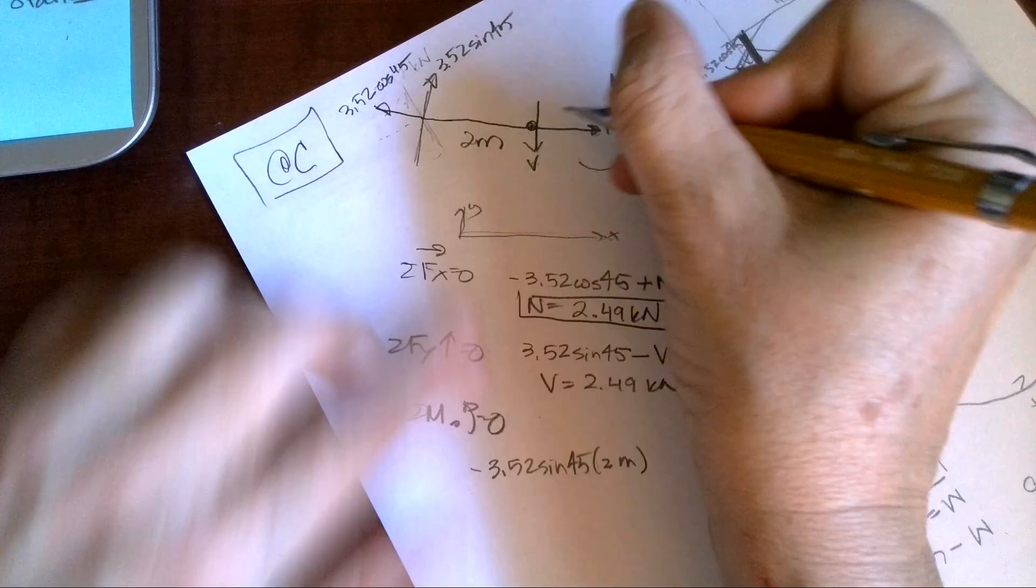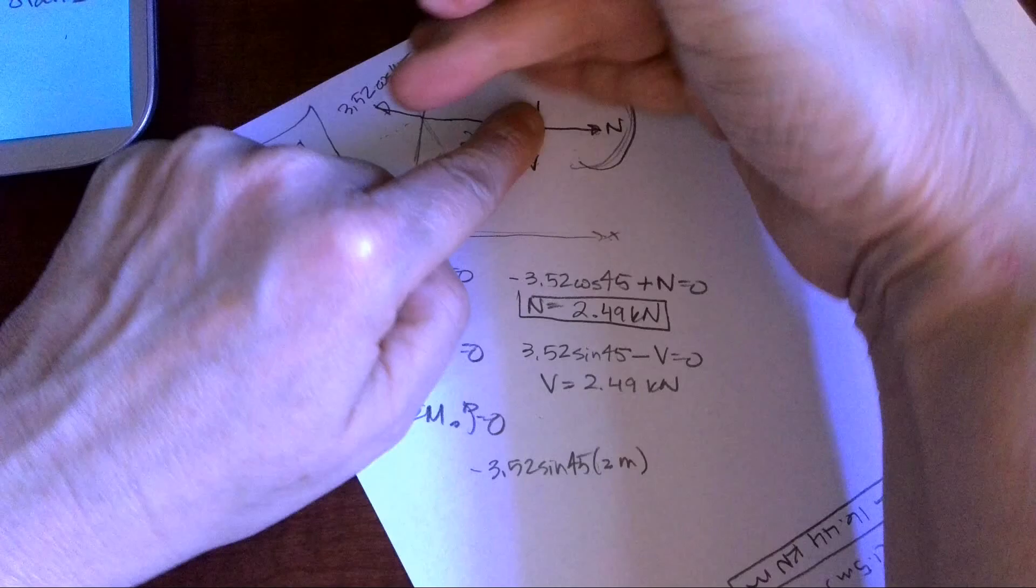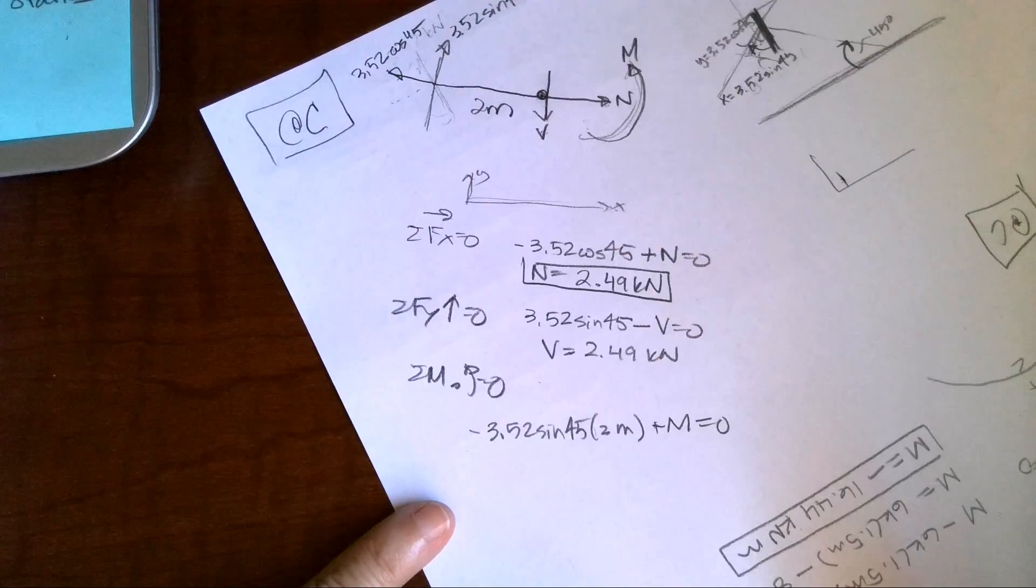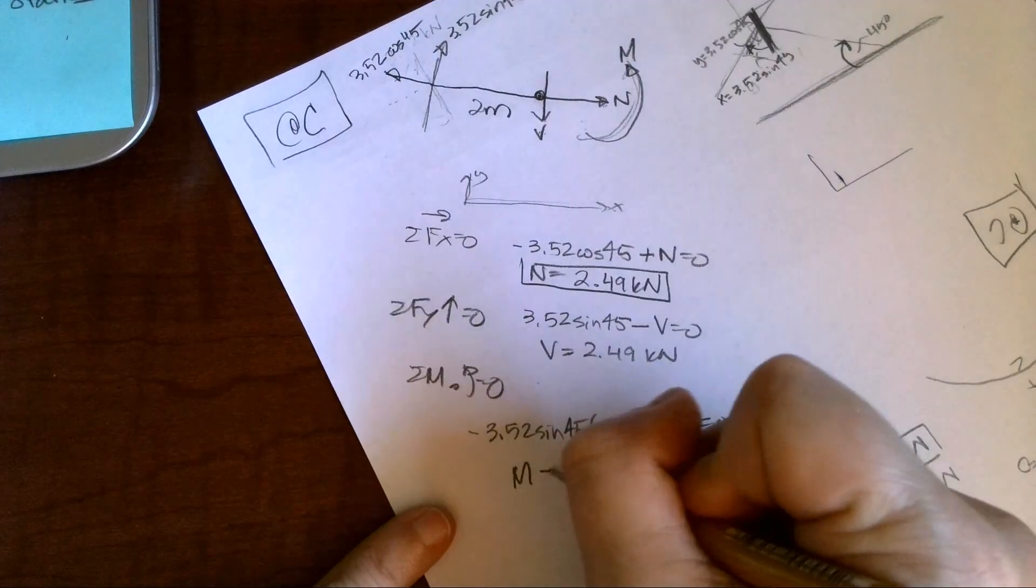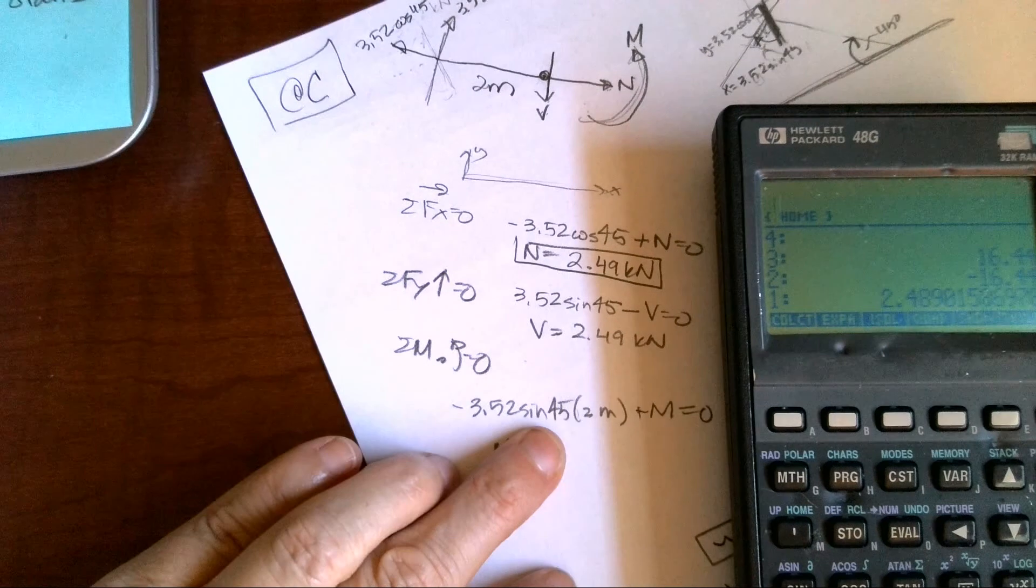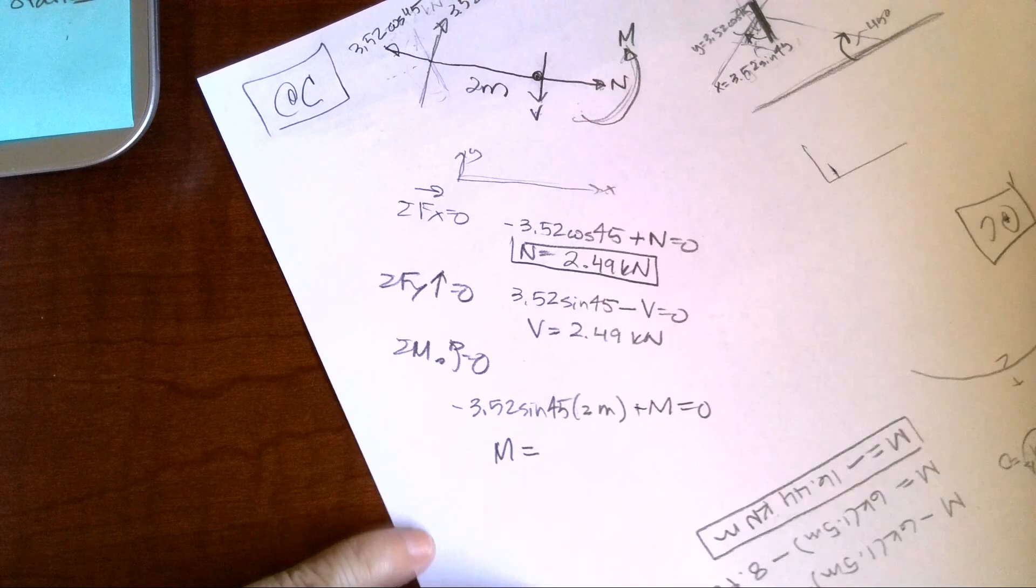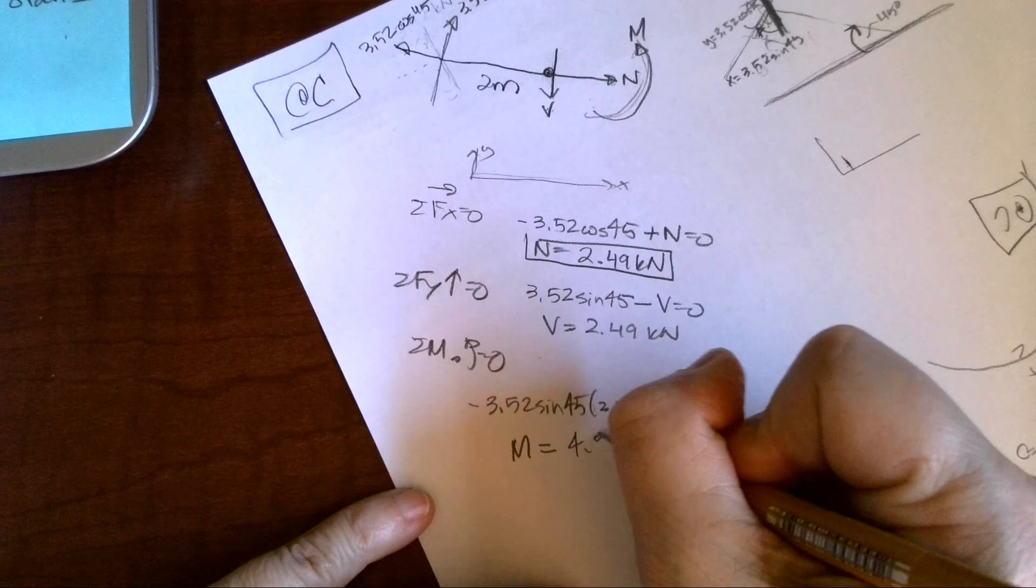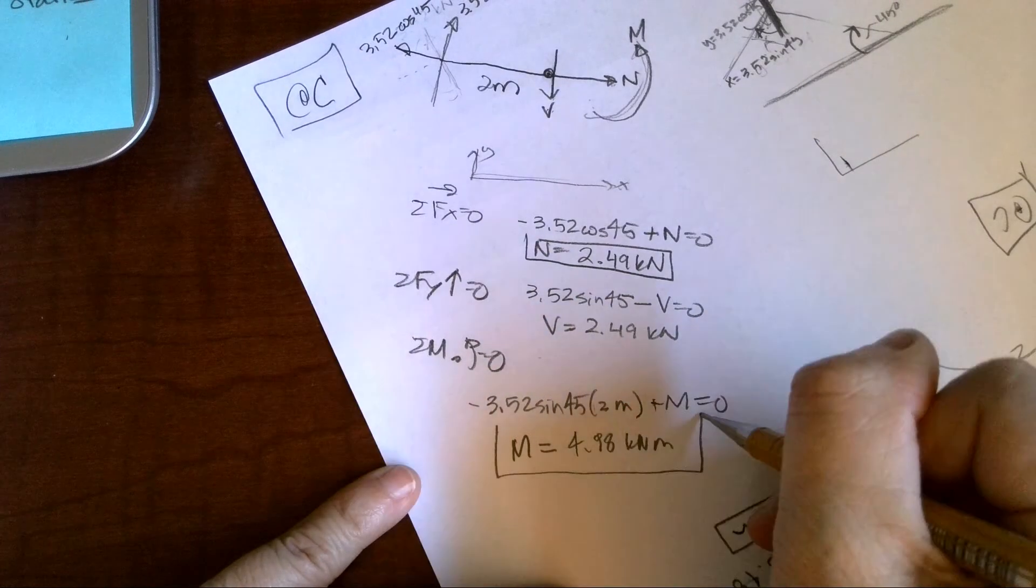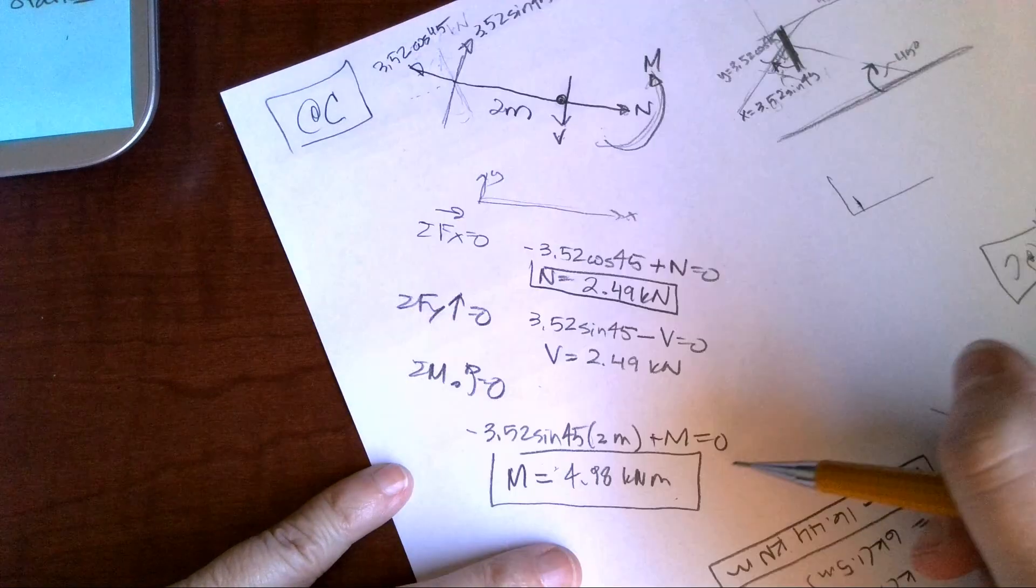I have an internal moment at this point and it's showing clockwise positive plus moment. All of those have to equal zero, so our moment equals 4.98 kilonewton meters.